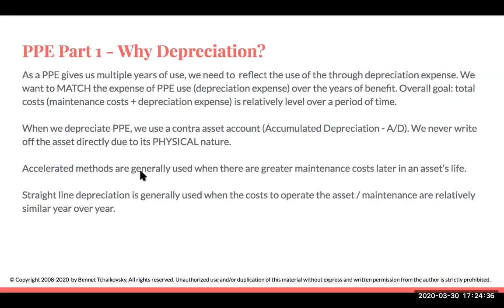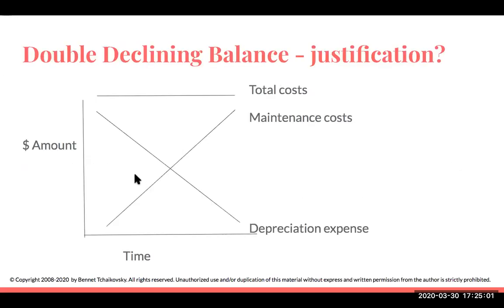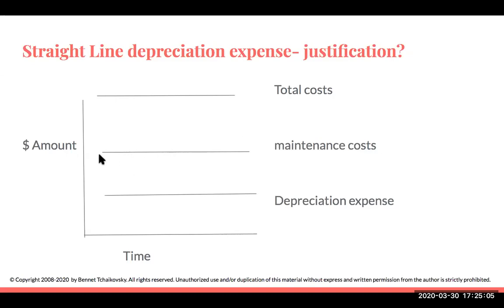There are different types of depreciation methods. One is an accelerated method, used when there are greater maintenance costs later in an asset's life. Then we have straight-line depreciation, used when costs are relatively similar year over year. For example, my 2010 Honda Accord — maintenance is relatively the same year over year, so my depreciation expense using straight-line takes the same amount every year, keeping the total cost of depreciation plus maintenance relatively level over time.